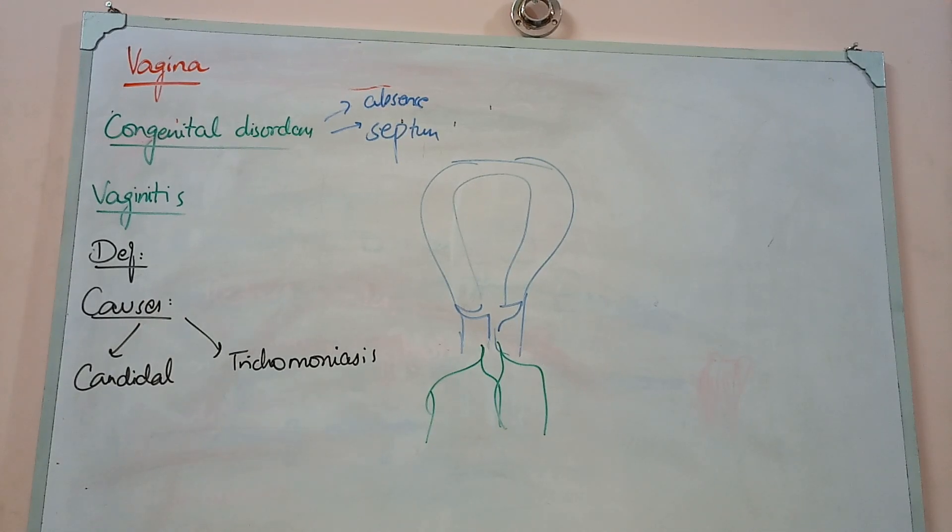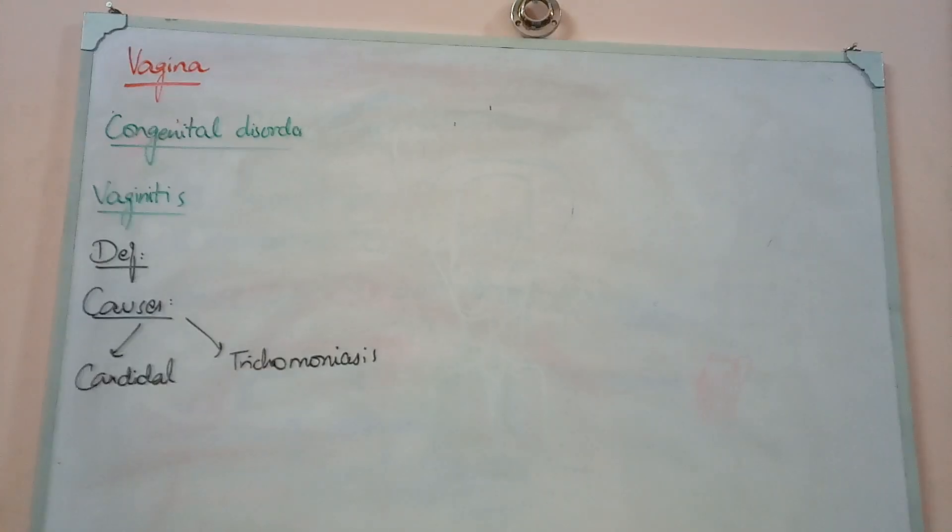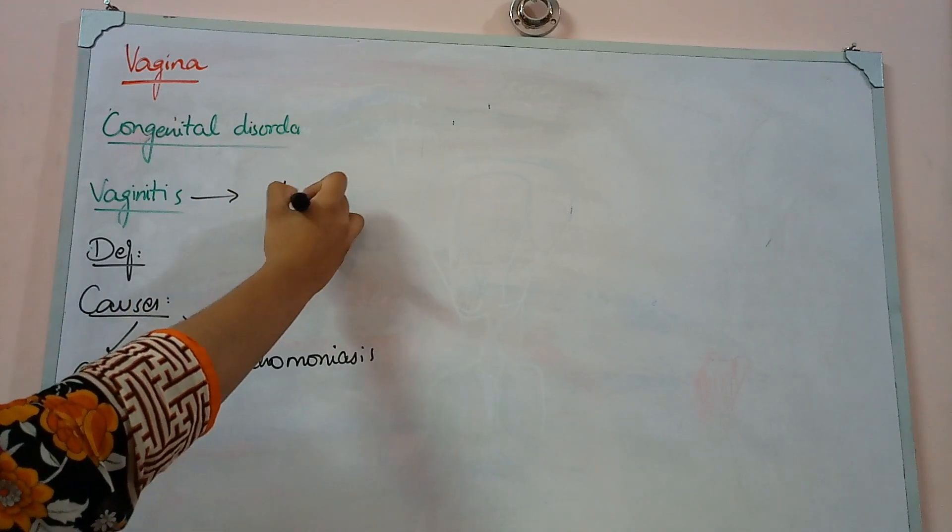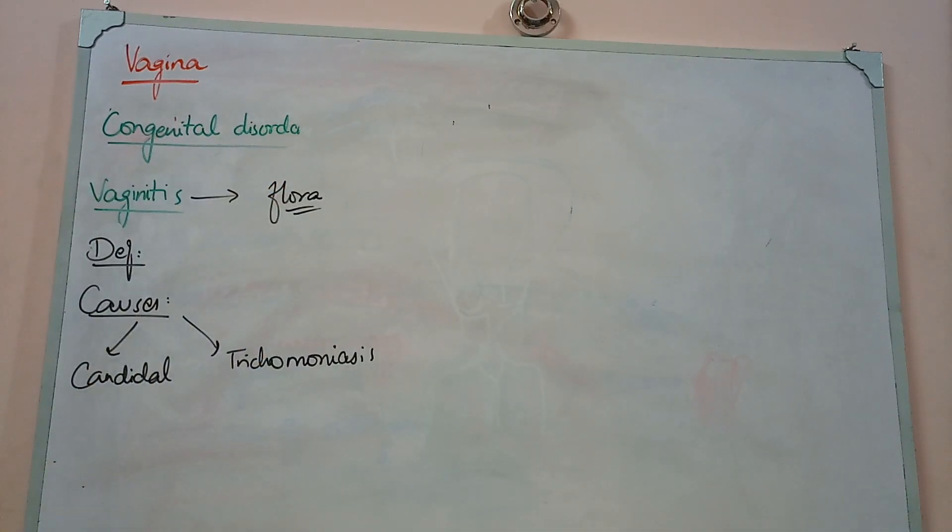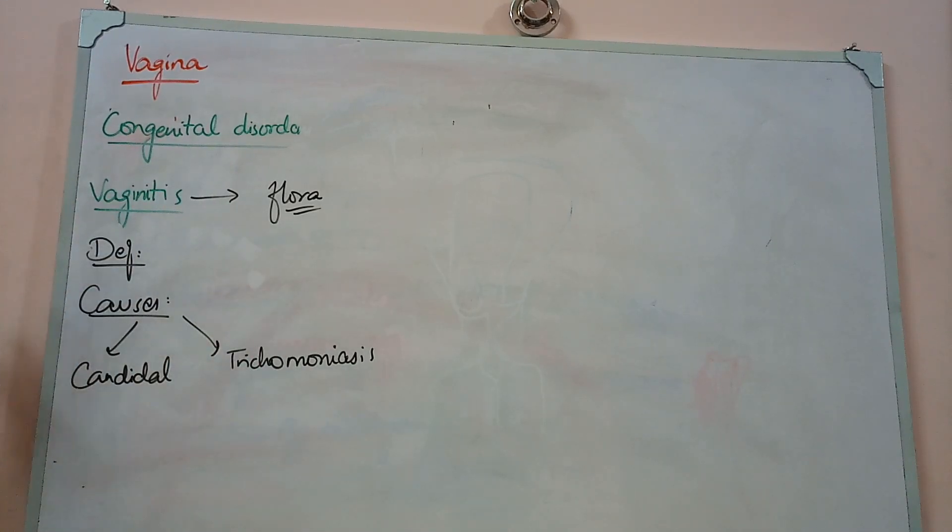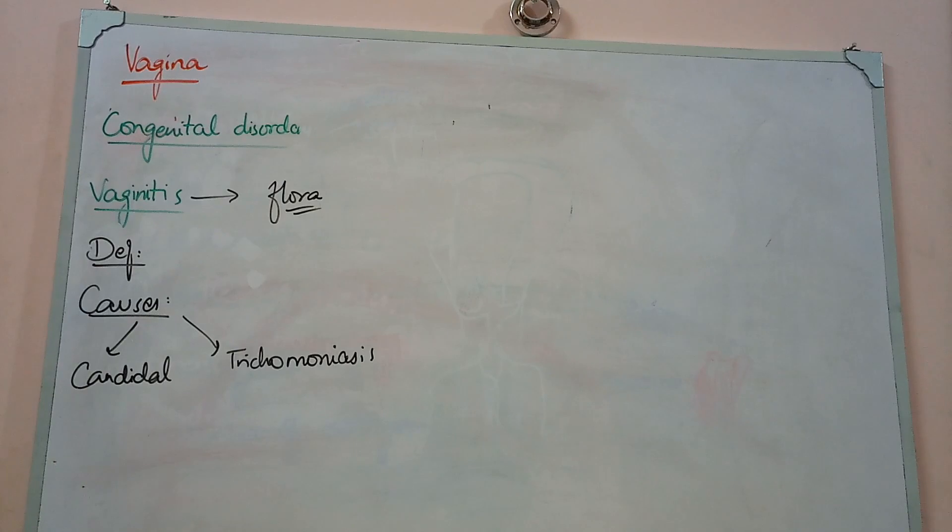The next thing we'll discuss in detail is inflammatory disorder of vagina, which is called vaginitis. Vaginitis is very important because this is a common pathology. It is common because of opportunistic agents - normal flora. These are bacteria that are always present and normally don't cause disease, but can cause it when the patient's immunity is low or there is some other pathology. The normal flora becomes active and causes infection resulting in inflammation of the vagina.